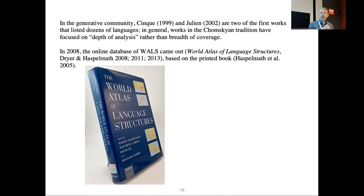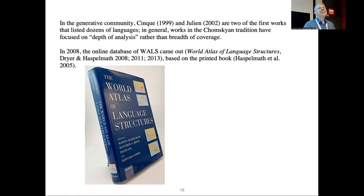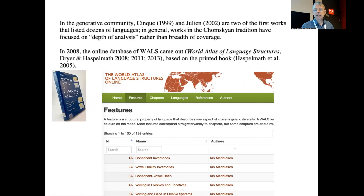In 2008, the online database of WALS came out. I brought this physical copy in case some of you haven't seen it. In 2005, it came out in this printed version — paper publication was still prestigious at that time. We had a CD-ROM so you could put it into your computer; the data were available electronically from the start, but on CD-ROM. Then in 2008, things really changed when Robert put it all on the web and we resolved the copyright issues. Since then, the World Atlas of Language Structures has been an important online resource.